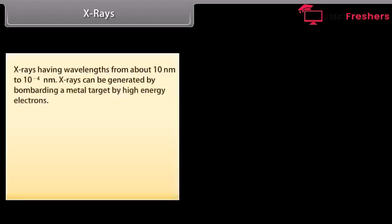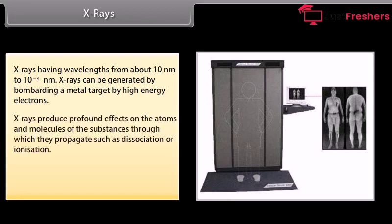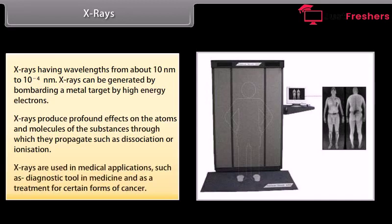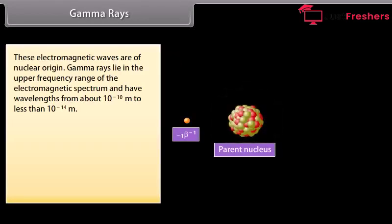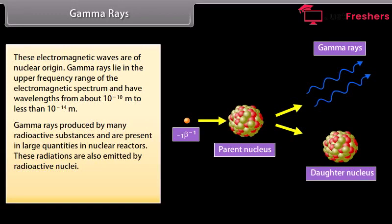X-rays have wavelengths from about 10 nm to 10⁻⁴ nm, and can be generated by bombarding a metal target with high energy electrons. X-rays produce profound effects on atoms and molecules, such as dissociation or ionization, and are used in medical diagnostics and as a treatment for certain forms of cancer. Gamma rays are of nuclear origin, lying in the upper frequency range of the electromagnetic spectrum with wavelengths from about 10⁻¹⁰ m to less than 10⁻¹⁴ m. They are produced by radioactive substances and nuclear reactors, and are used in medicine to destroy cancer cells.